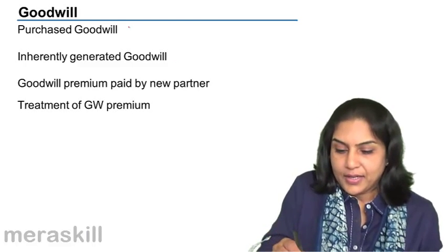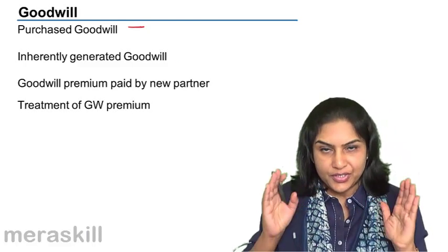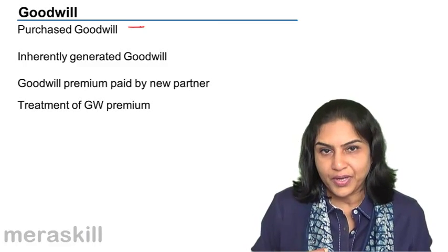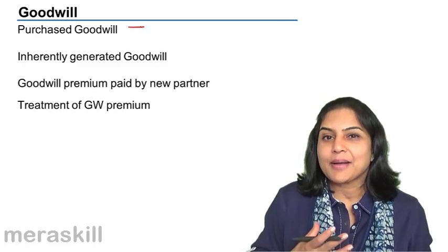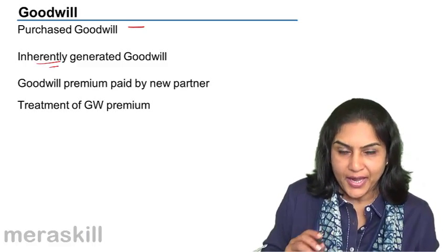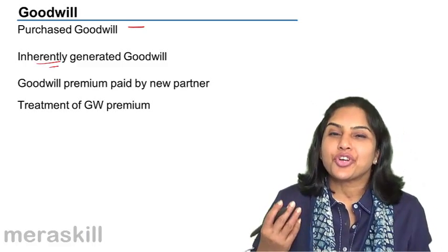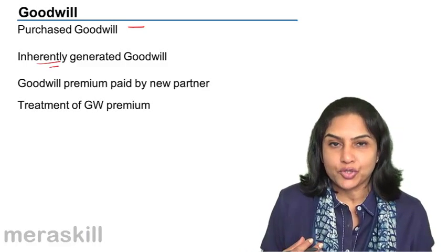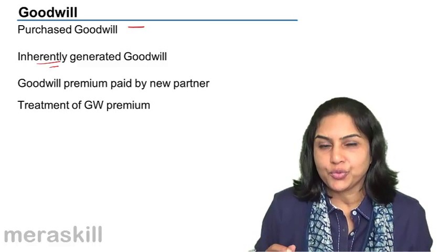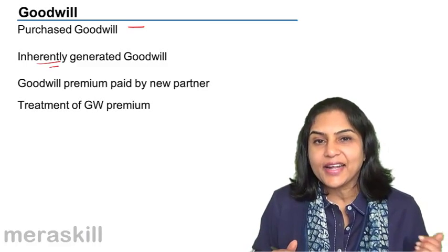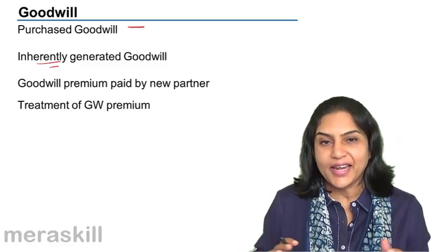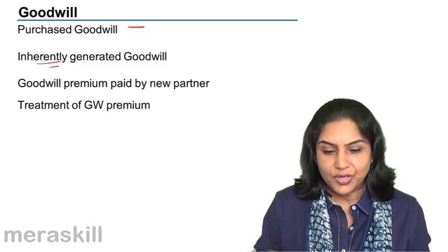Good, sound accounting practice says that if we think there is goodwill in the business — something which has been built inherently over a period of time — it should not be raised in the books. There is a lot of subjectivity in how we will value the goodwill, and therefore inherently generated goodwill is not actually shown in the balance sheet. It may exist, but we do not bring it into the books.